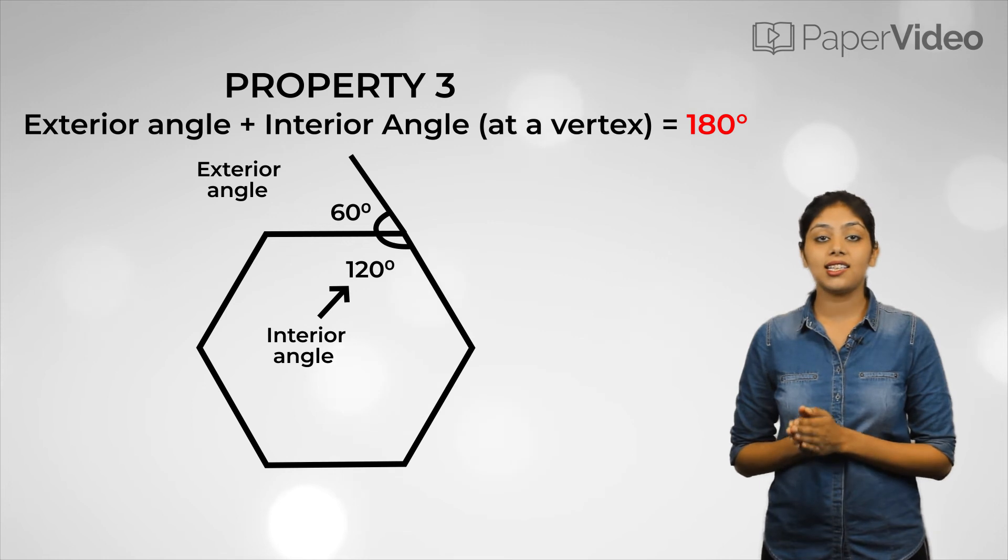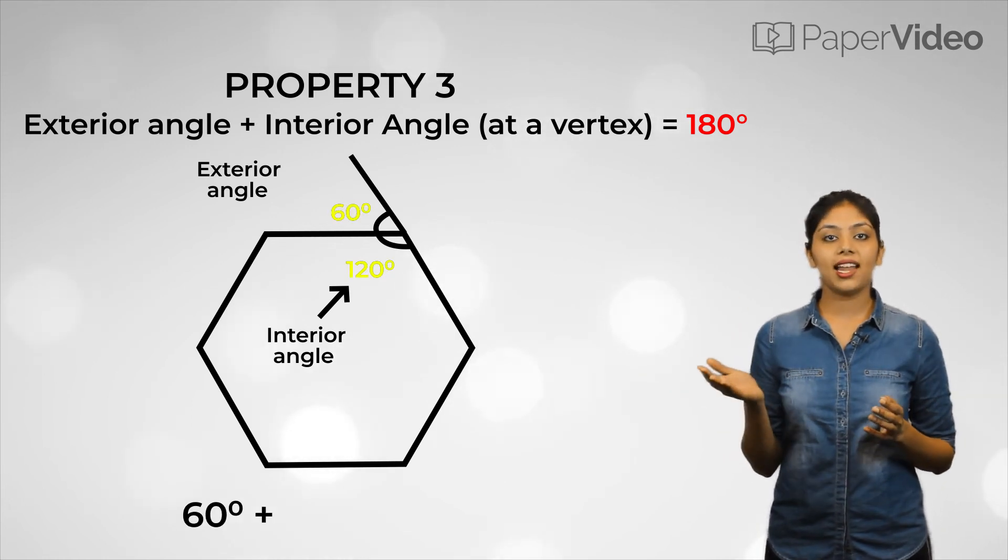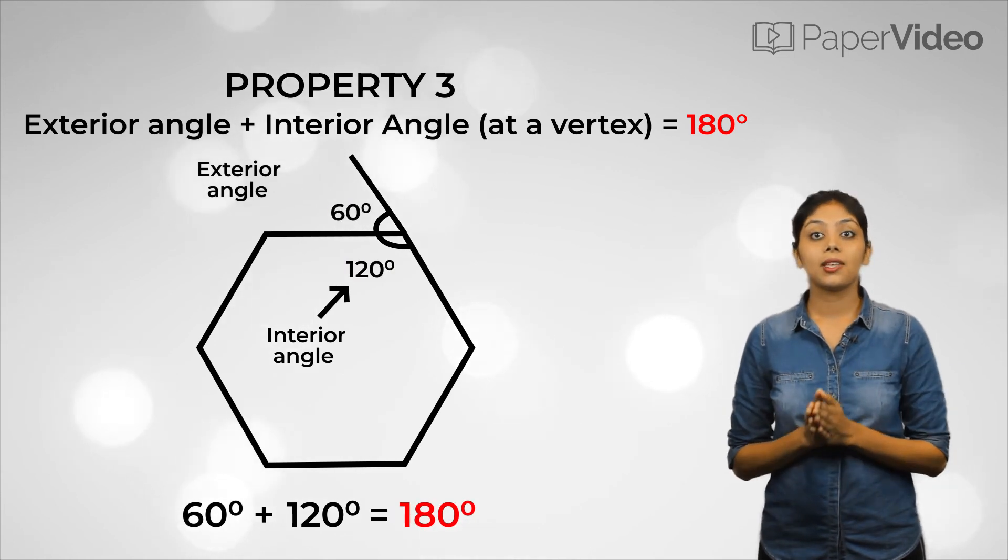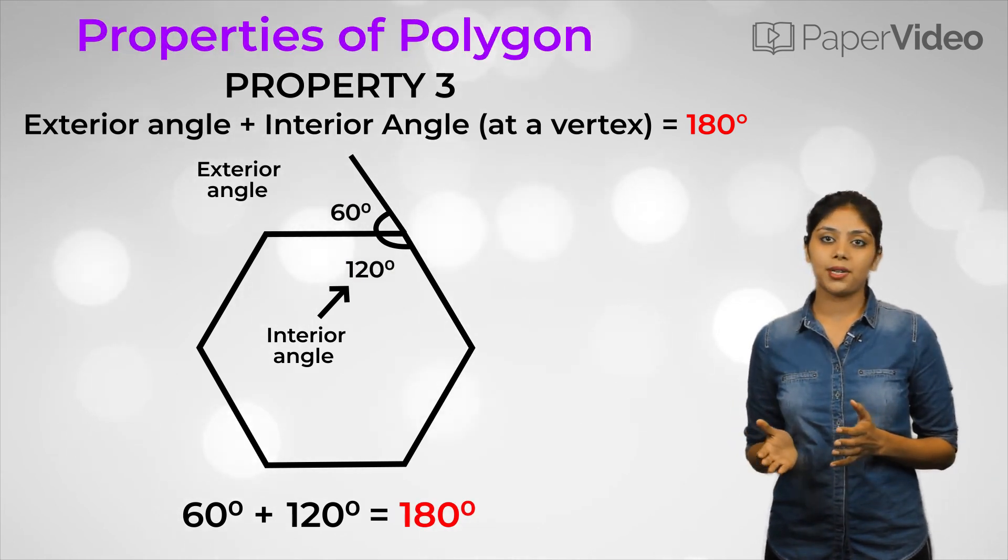As we can see in this hexagon, the sum of the exterior angle and the interior angle at a vertex is equal to 180 degrees. These are the three important properties of a polygon.